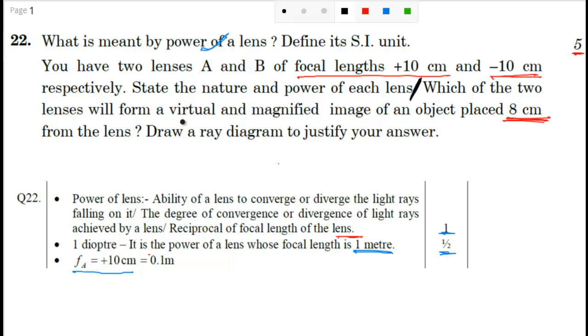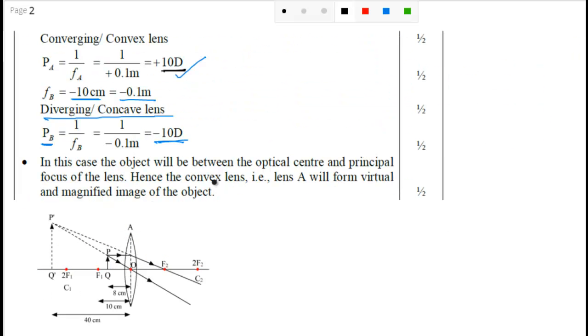Now which of the two lens will form a virtual. Now virtual it's fine, but magnified also. So that means if it is virtual and magnified, guys, it will be convex lens.